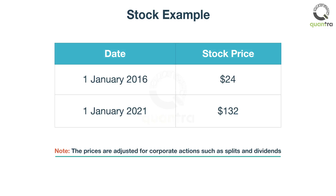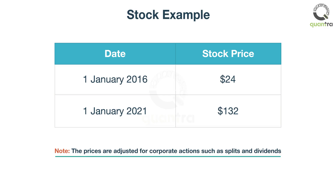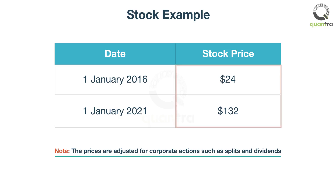Let's look at an example of a stock. Apple was trading at $24 in January 2016, but it is trading at $132 in January 2021 — that's more than five times the price in 2016. If someone looks at these two figures, they will say it is impossible to predict that Apple could reach $132.